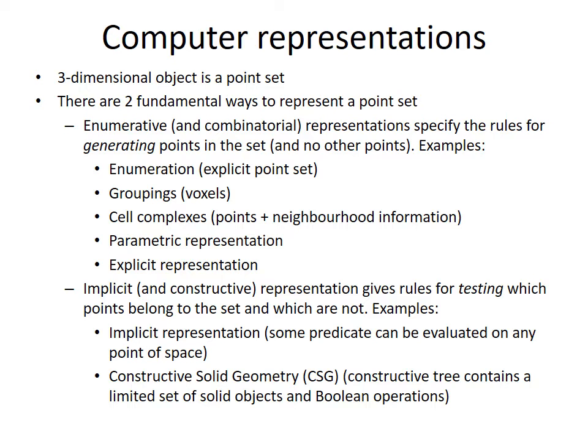The first one is enumerative and combinatorial representations. They specify the rules for generating points in the set and no other points. How does it work?